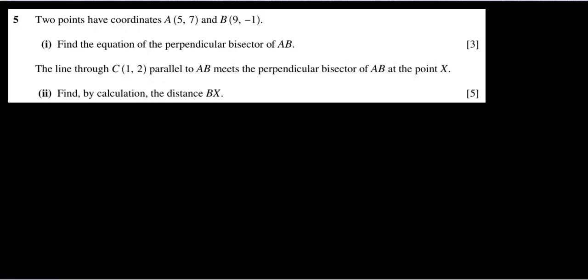In question 5, they're saying that there are coordinates (5, 7) and (9, -1). Find the equation of the perpendicular bisector of AB.